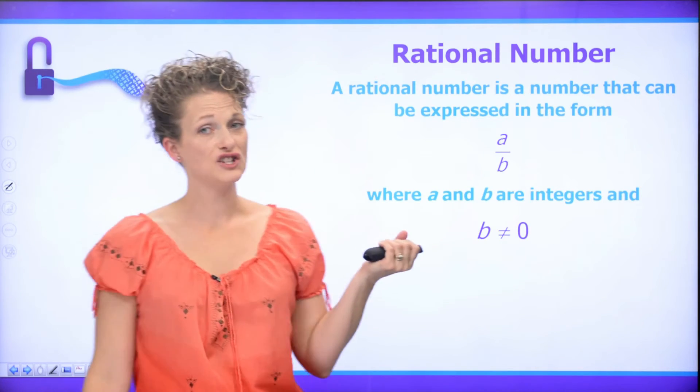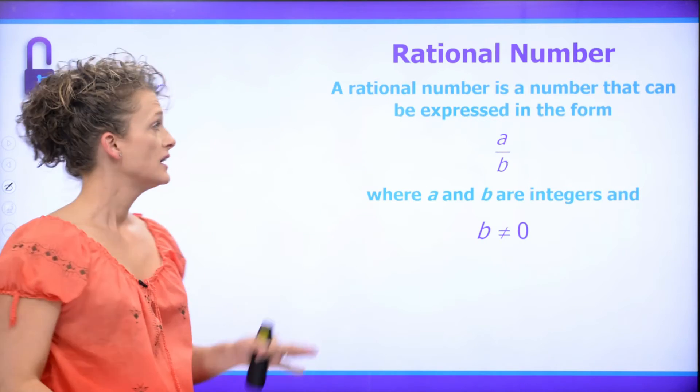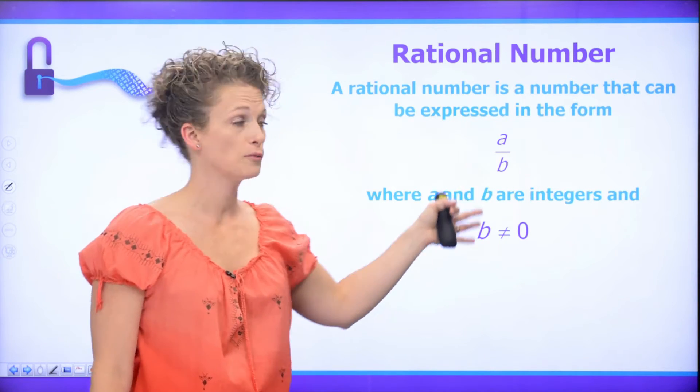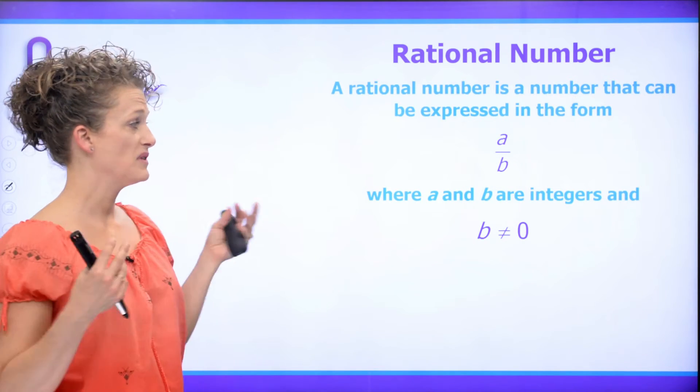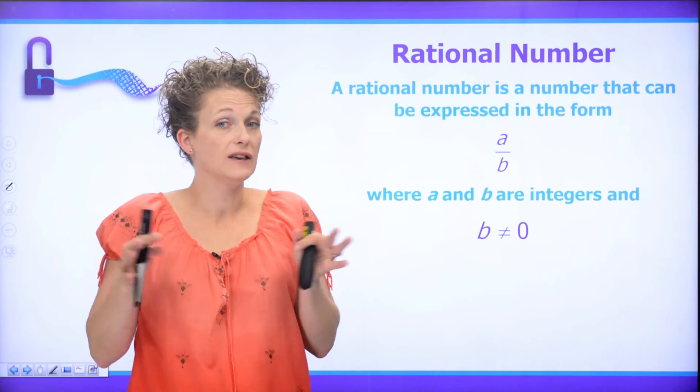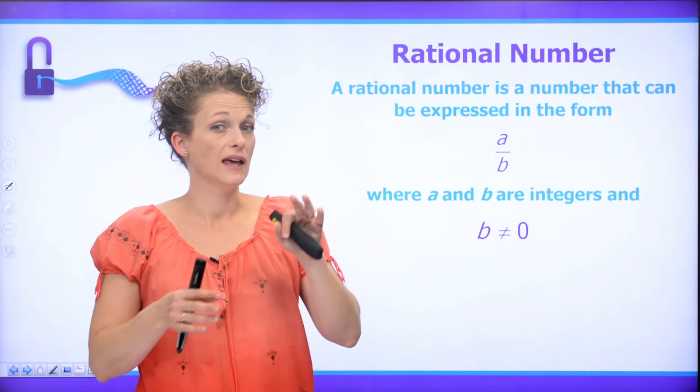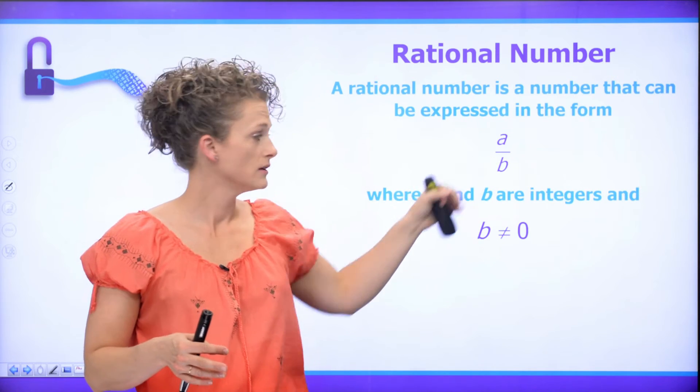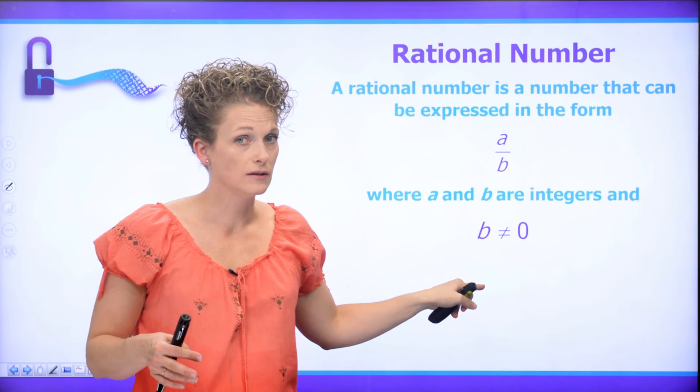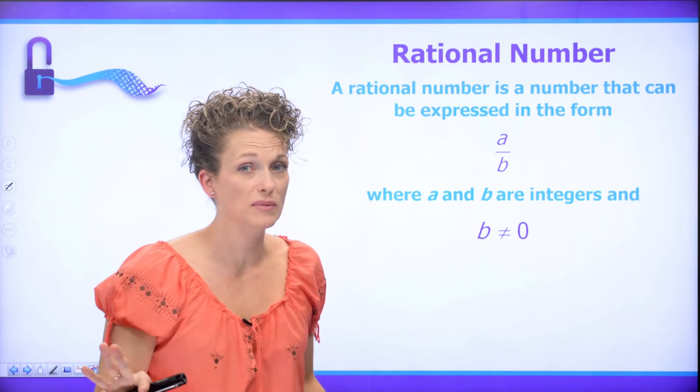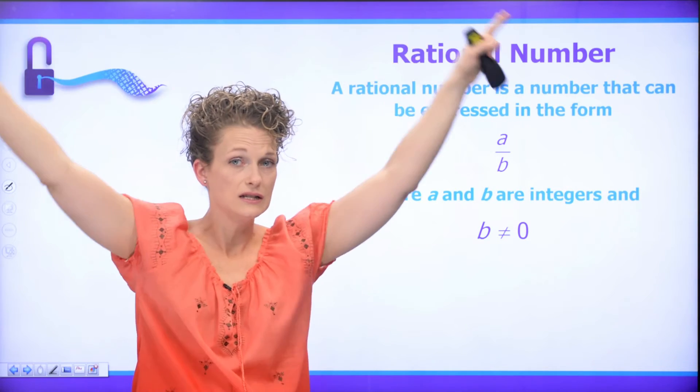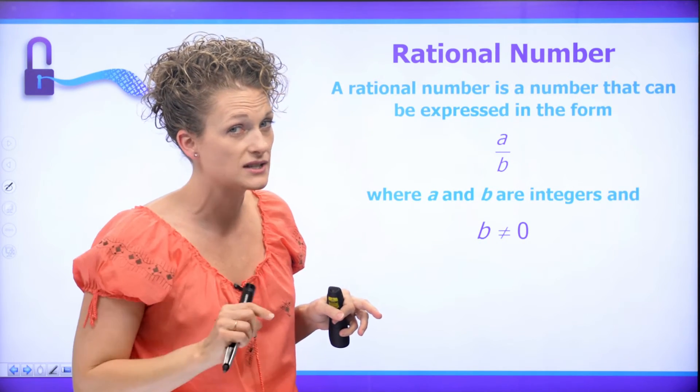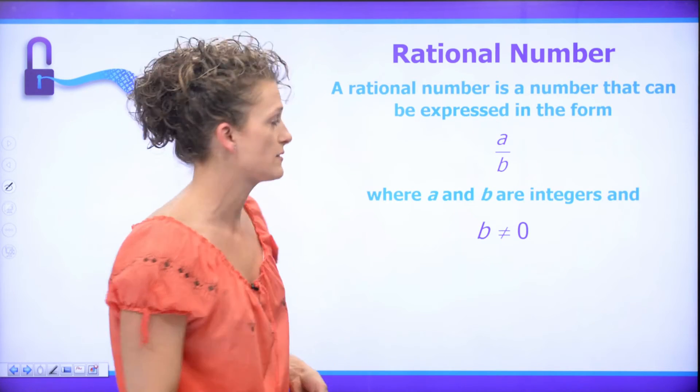So, a rational number, the general definition, is that it can be expressed in the form of A over B. Now, A and B are just integers. So, if you can take any integers and express them as this fraction, but B can't be zero. Remember, if we try and divide by zero, the planets start to go crazy, things might explode, and there's even some thoughts that we might start to lose brain cells. So we never divide by zero.